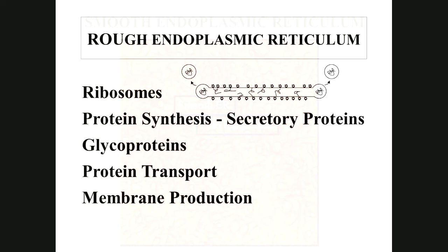Rough endoplasmic reticulum has ribosomes — visible as little dots on the outside — because ribosomes are the sites of protein synthesis. They synthesize proteins and thread them into the ER, where they collect in cisternae and are pinched off as vesicles. These include secretory proteins like hormones and oils, glycoproteins for new membrane, and other proteins.